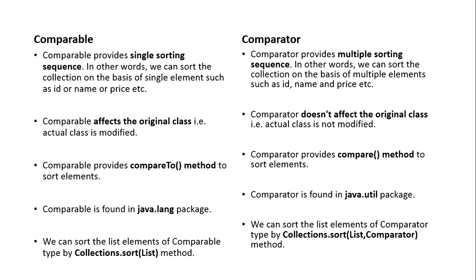In the case of Comparator, we can provide multiple sorting sequences. In the same example, if we have an Employee class with employee name, employee salary, and employee ID, and we would like to sort the data on the basis of employee name as well as employee salary, or in future there may be a requirement to sort on the basis of employee ID — Comparator gives you the option to do that.